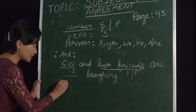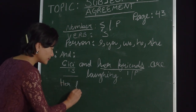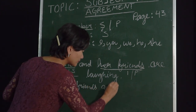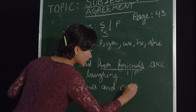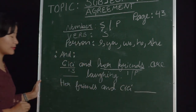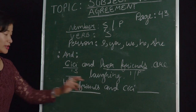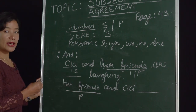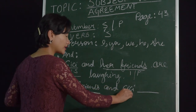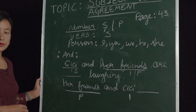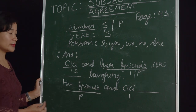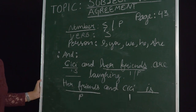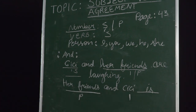When the situation is reversed — supposing I start the sentence with 'her friends and CC' — we now have a plural subject first and then a singular subject, CC. In this case, we would go with the subject closest to the verb, which is the singular 'CC.' So the verb here should be 'is,' not 'are.' That's another example of the closest-subject rule.